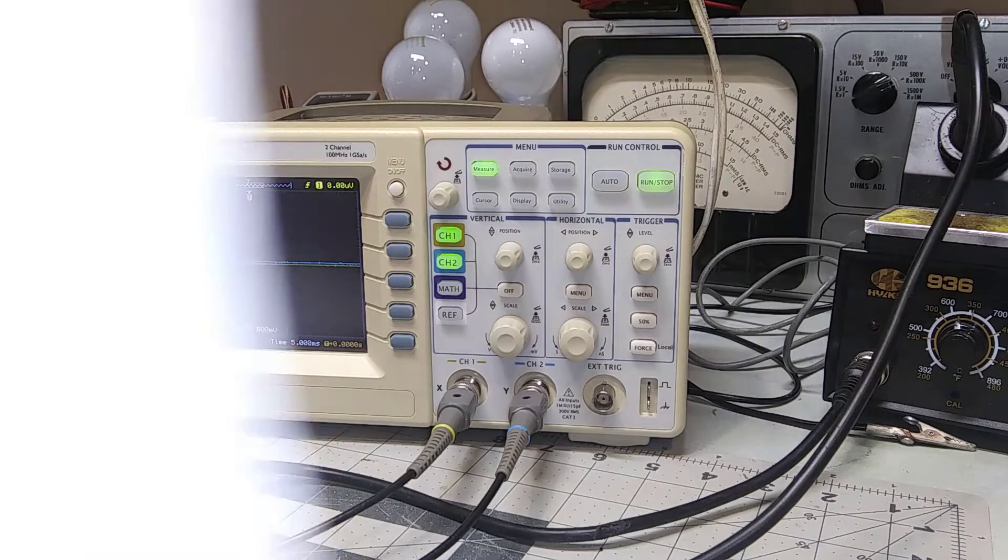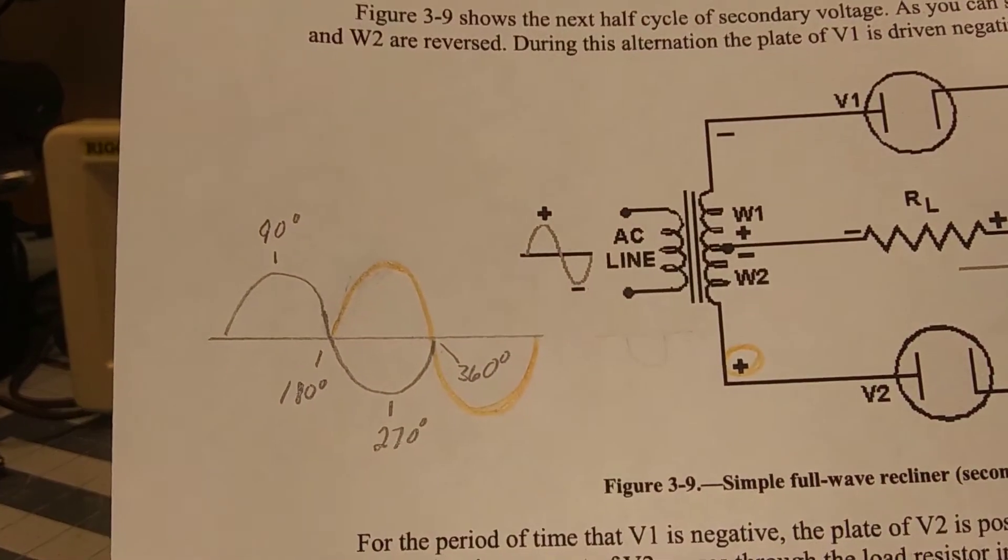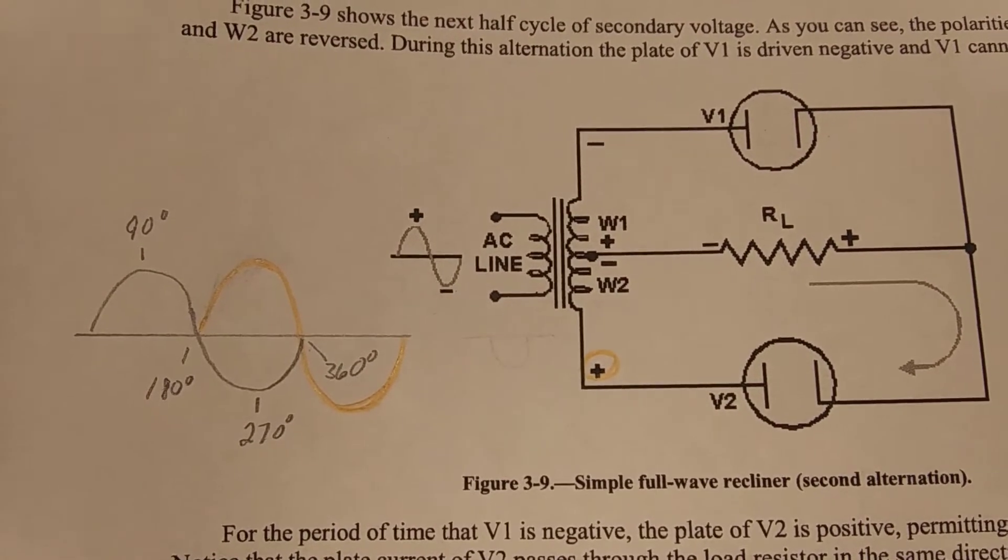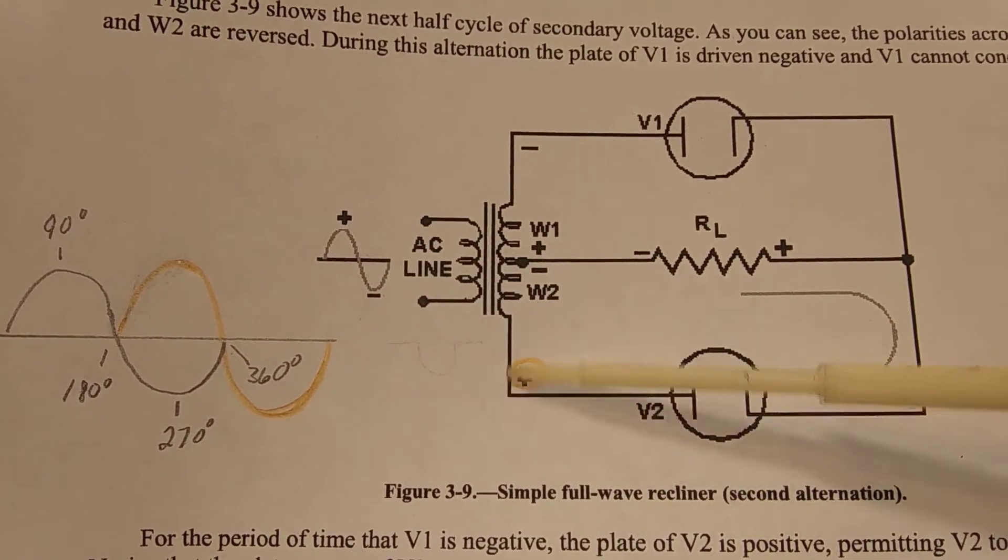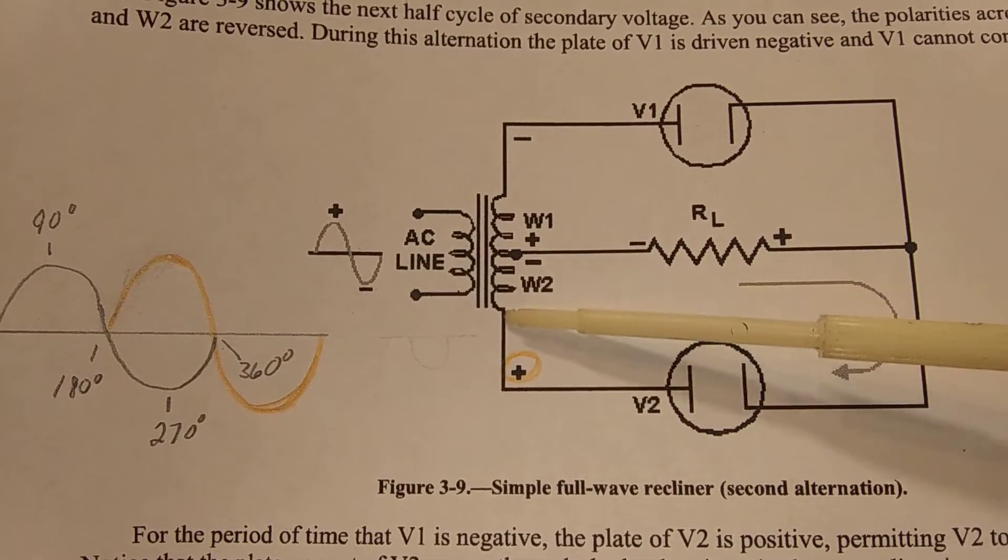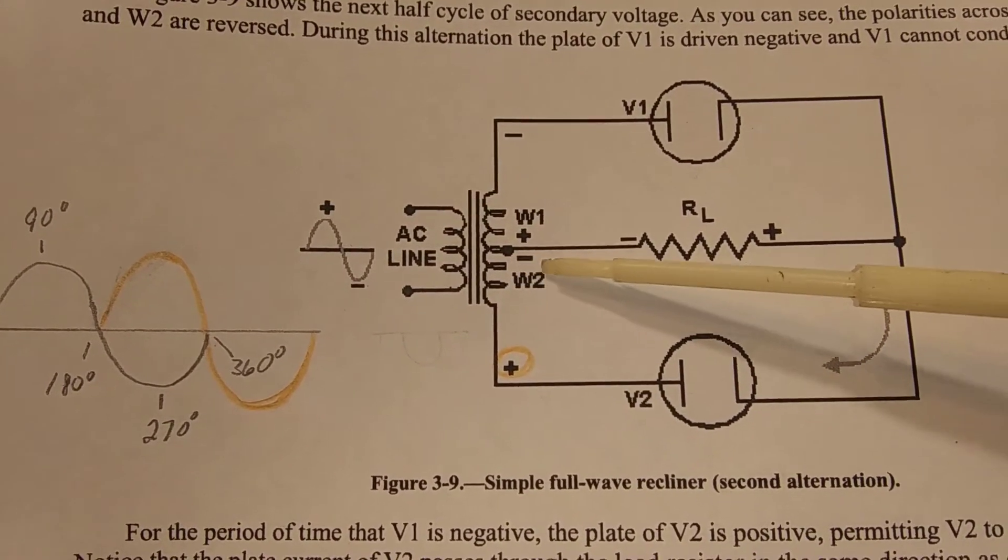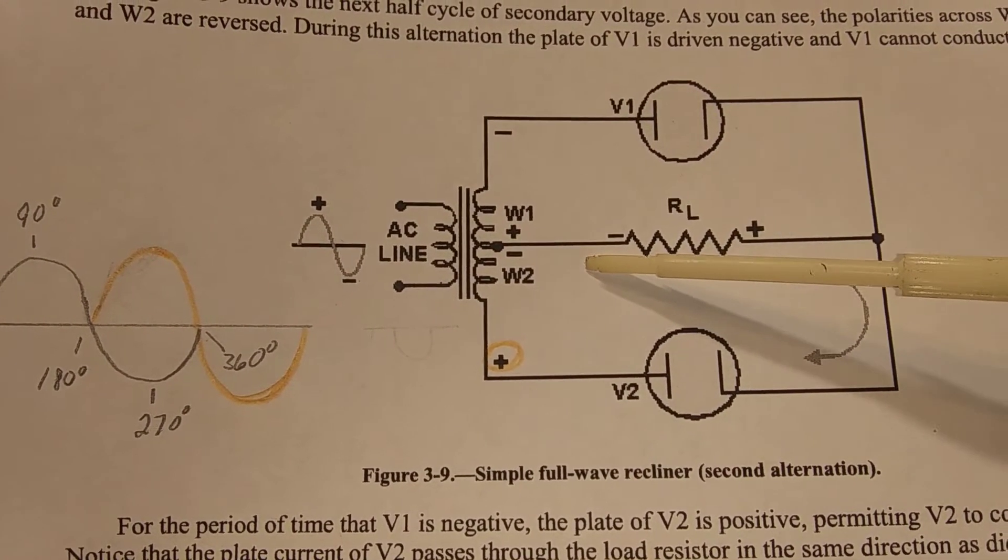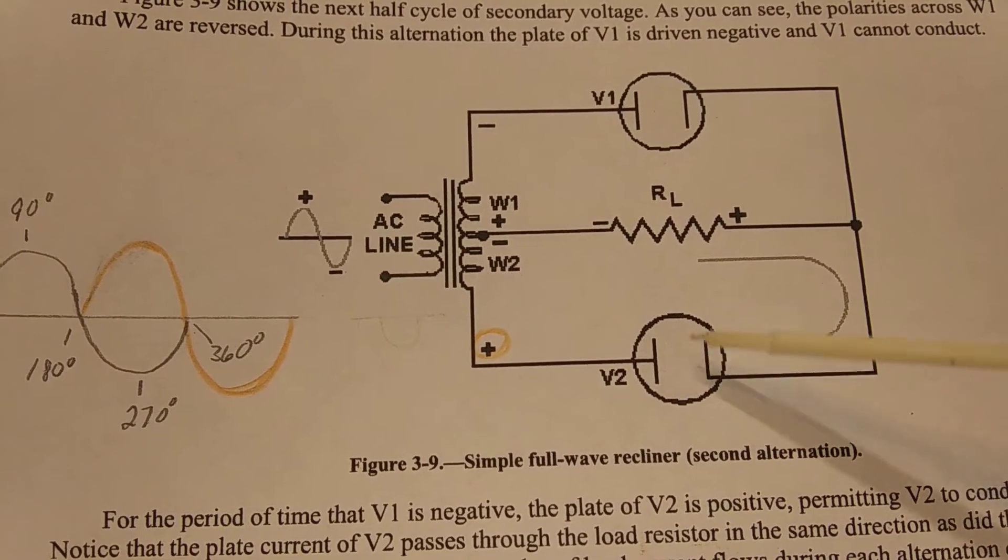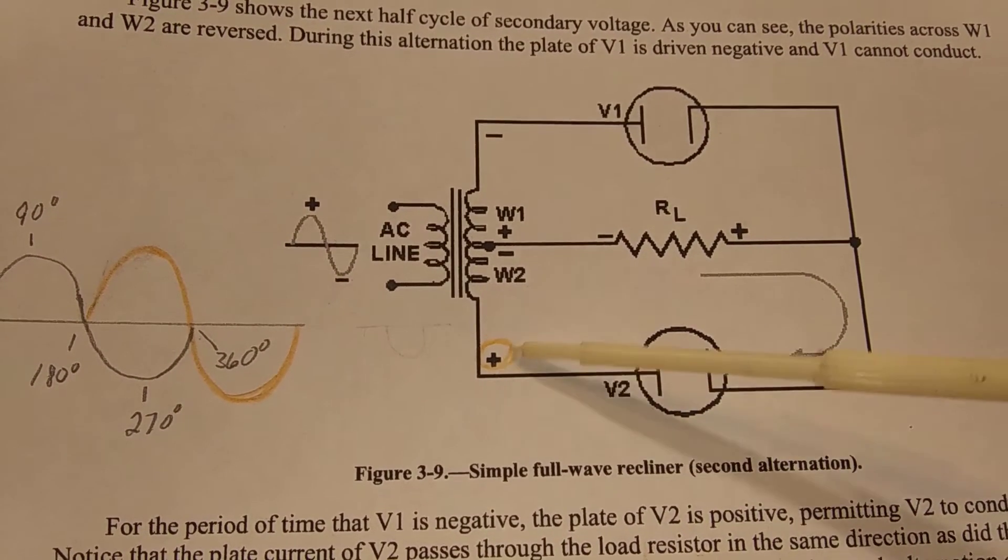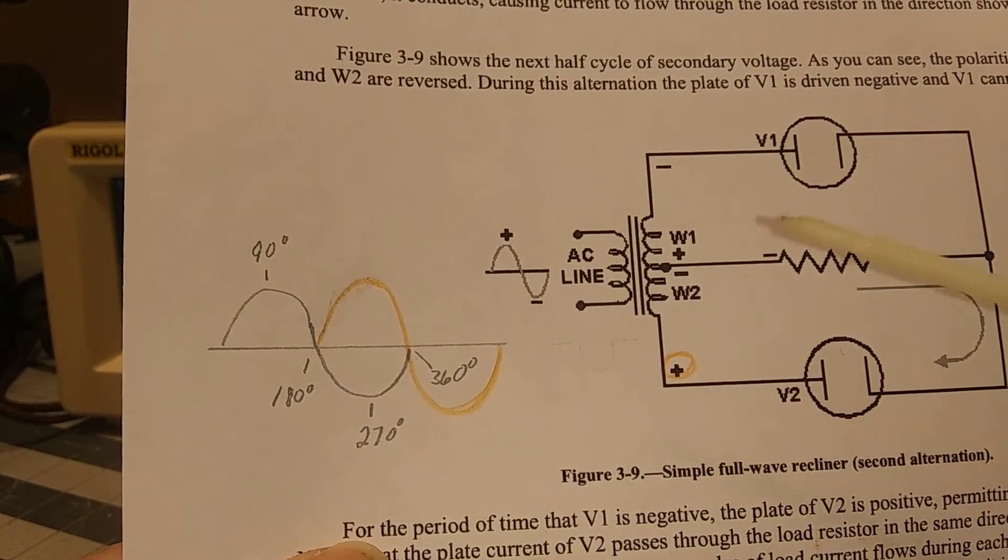But now, this is what gets interesting. This, I need to explain a little bit. Now this is what you're going to see when this portion of the transformer is being energized by a positive going wave, or portion of the cycle. And once again, you see the current traveling from minus to plus. And once again, traveling through the tube and back up here. Of course, this is a minus. This is a negative voltage. And this, of course, is plus.